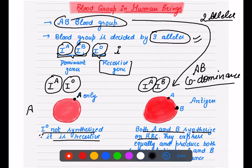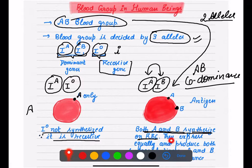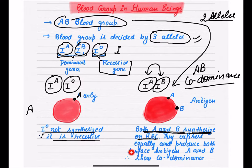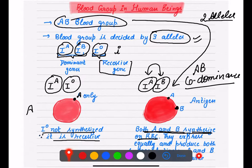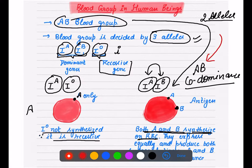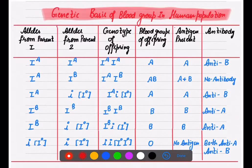In AB blood group, both alleles I^A and I^B express equally and independently, both producing antigens on RBCs — this is co-dominance. For dominant-recessive examples you can mention blood group A, but the best example for co-dominance is AB blood group where both A and B antigens are synthesized.